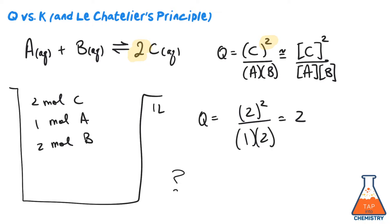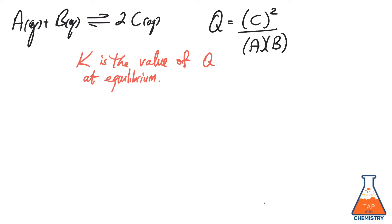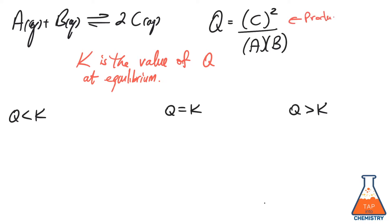The question is, what would happen now? And that all comes down to one question: is Q less than, equal to, or greater than K? Since K is the value of Q once we've reached equilibrium, there are three possibilities. Remember that Q is the ratio of products to reactants, which means that a big Q means lots of products, and a little Q means lots of reactants.